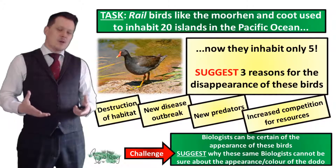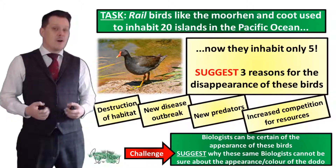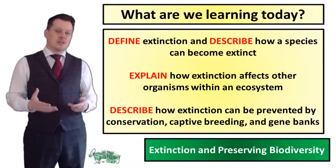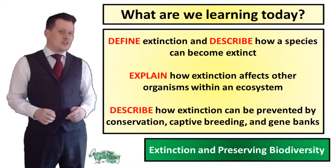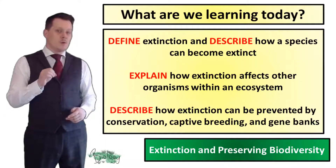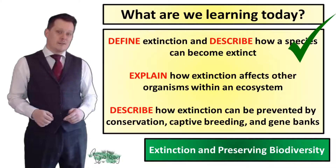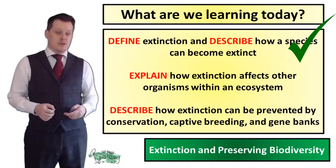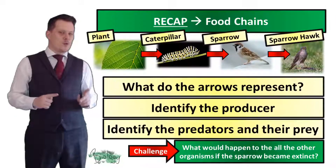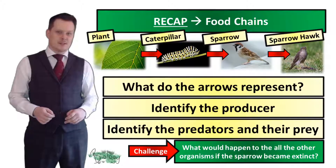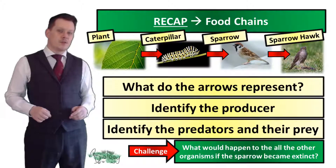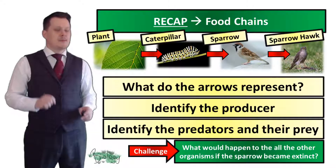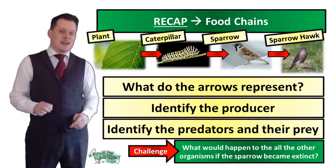Although we can be quite certain about the dodo's size and shape because there are fossils. So we can define extinction as there being no more of that species left alive. But how does the extinction of one organism affect the other organisms within an ecosystem? To explore this, we're going to quickly recap food chains. I want you to identify what the arrows mean, identify the producer, and identify the predators and their prey.